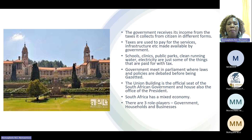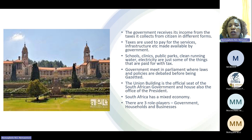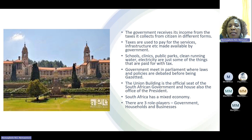The government meets in parliament where laws and policies are debated before being gazetted. The Union Building is the official seat of the South African government and also houses the office of the president. In South Africa, we have a mixed economy where we have the government, the households and the businesses as the role players.